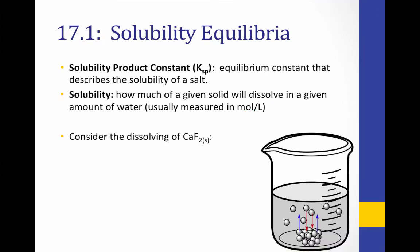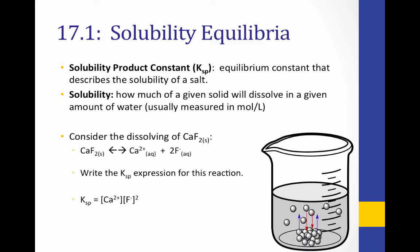Let's consider the dissolving of calcium fluoride. In order to write a KSP expression for this solution, we first write the dissociation equation: solid CaF₂ dissociates into Ca²⁺ ions plus 2 moles of F⁻ ions, since it's a 2-to-1 ratio. Writing our solubility expression, we get KSP equals the concentration of calcium ions times the concentration of fluoride ions squared. Recall that solids do not go in a K expression, so there is no denominator. In fact, since solubility equilibria always involves dissolving a solid, we will never have a denominator in a KSP expression.